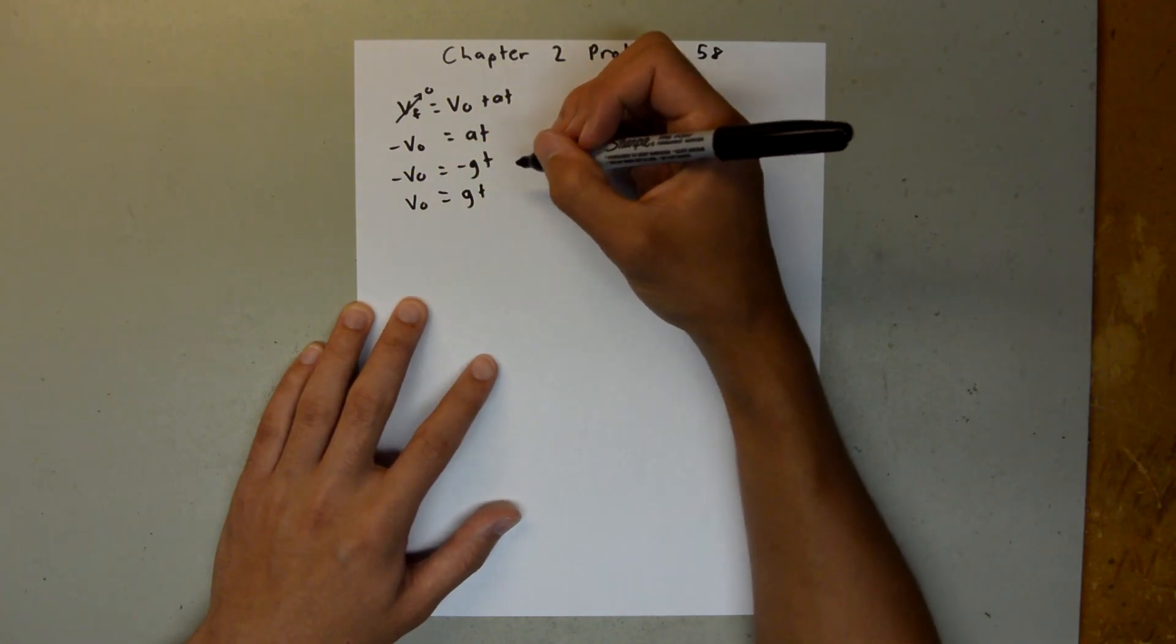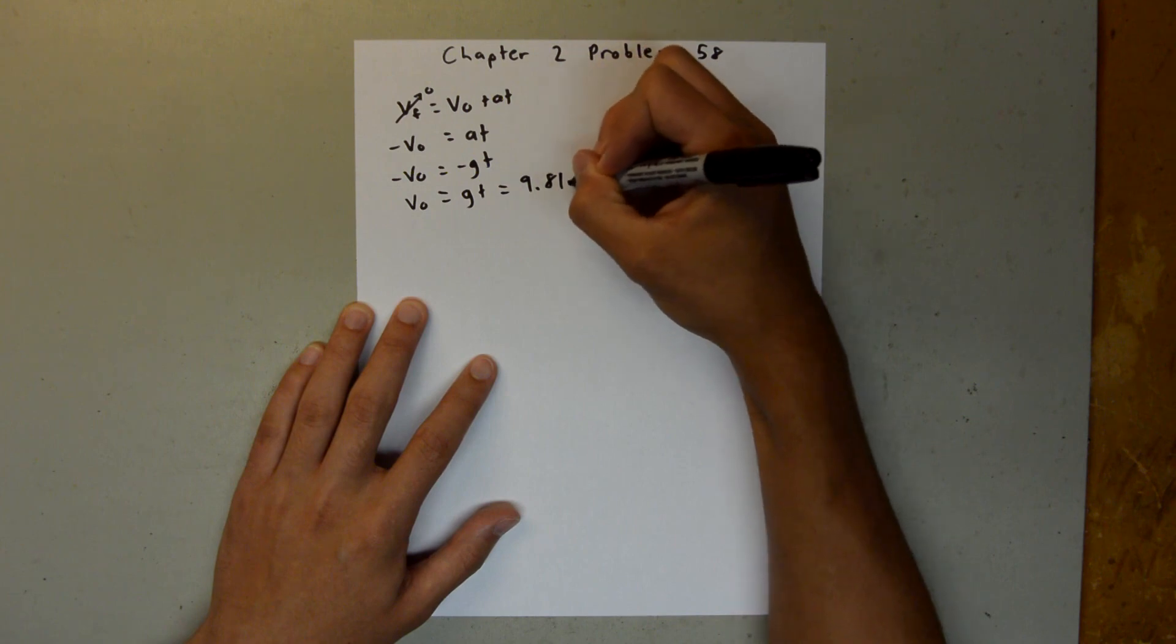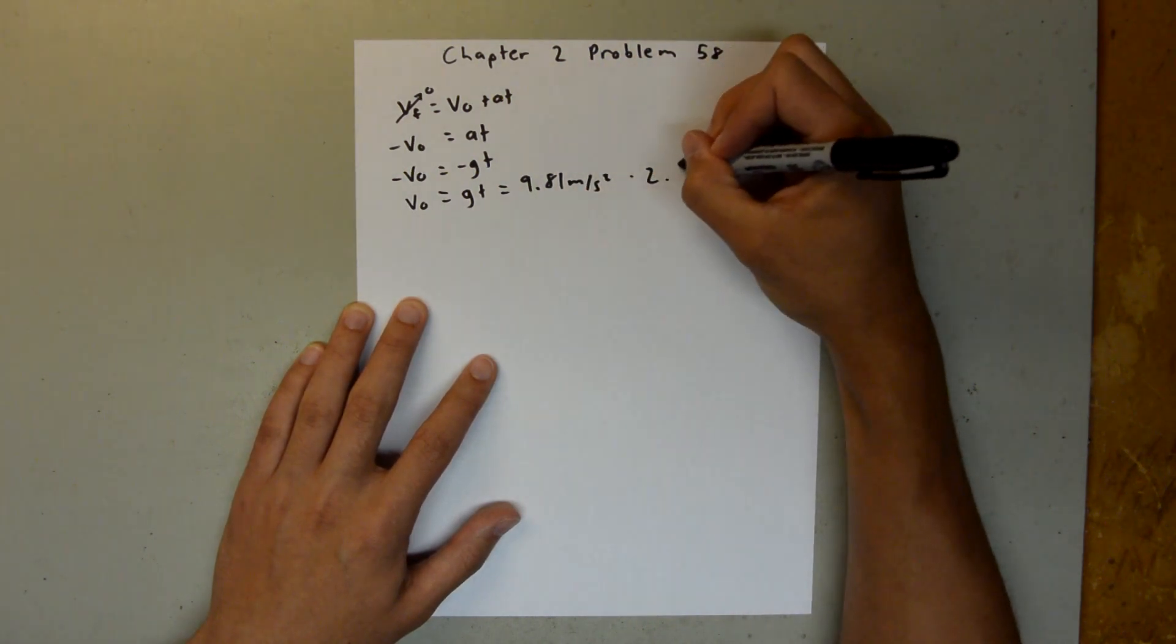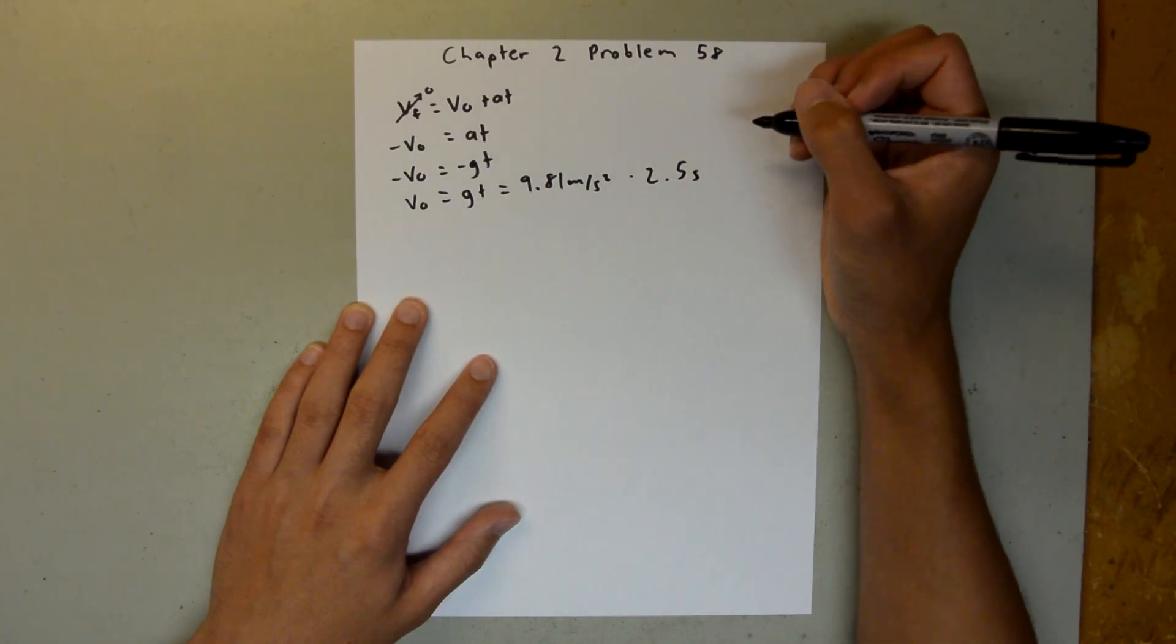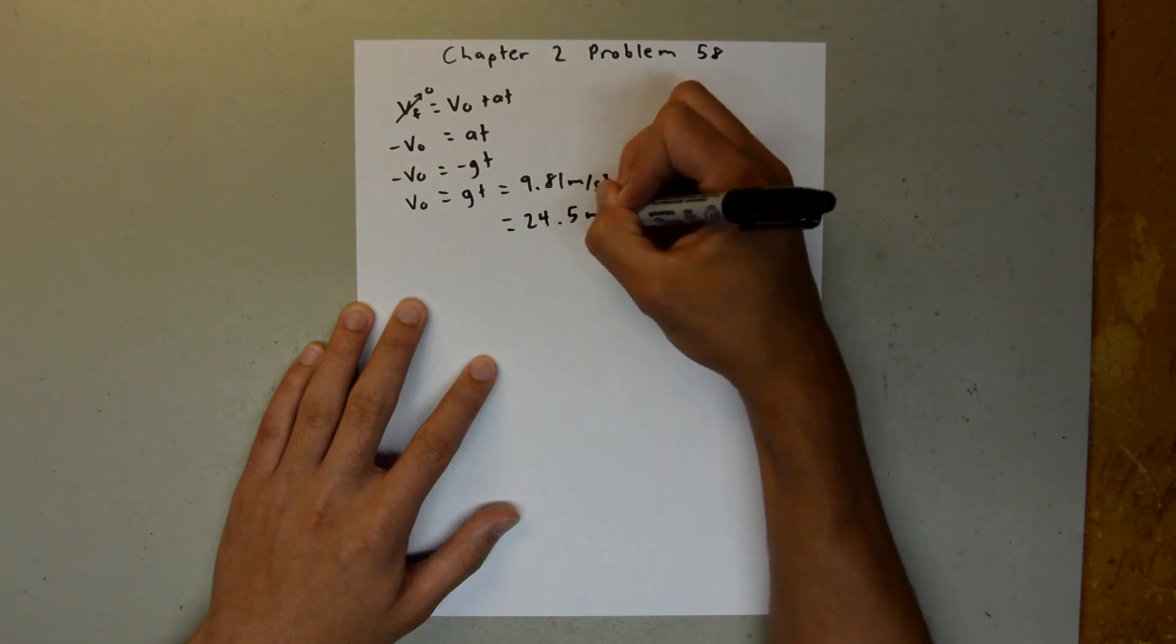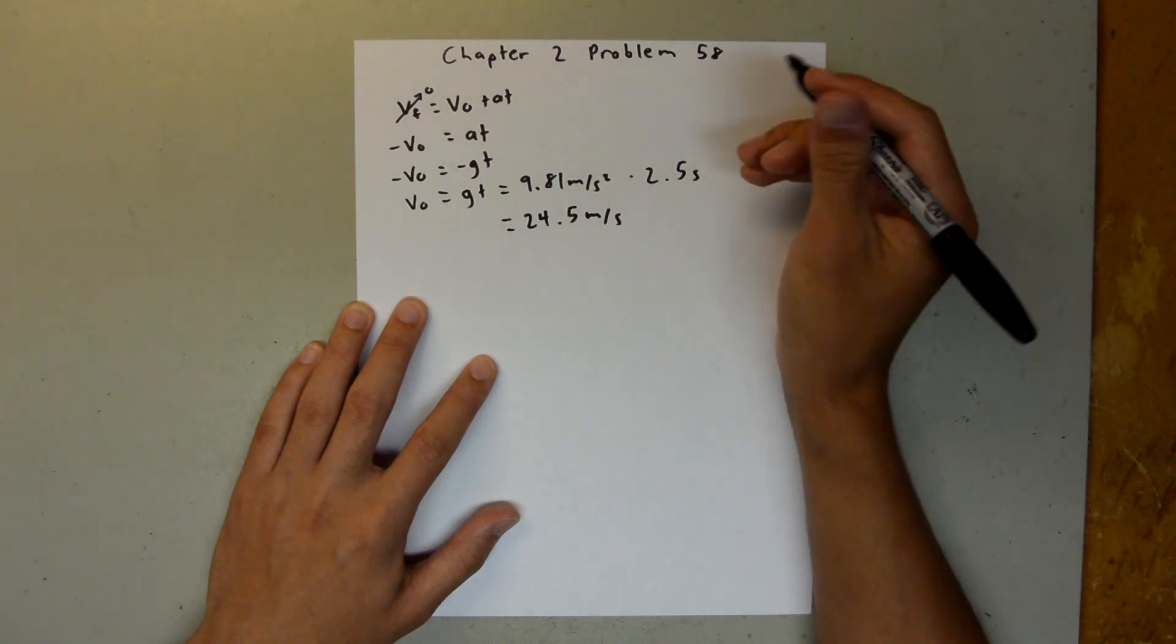Both of those values we are given, so this is equal to 9.81 meters per second squared times 2.5 seconds. When you plug that into your calculator, you should get 24.5 meters per second for our initial velocity.